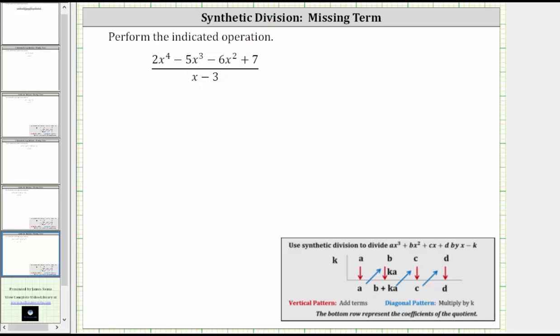Let's first take a look at the numerator, which is the dividend. We have two x to the fourth minus five x cubed minus six x squared plus seven. Notice how there is no x term in the dividend, and we need one, and therefore we will include a zero x term.